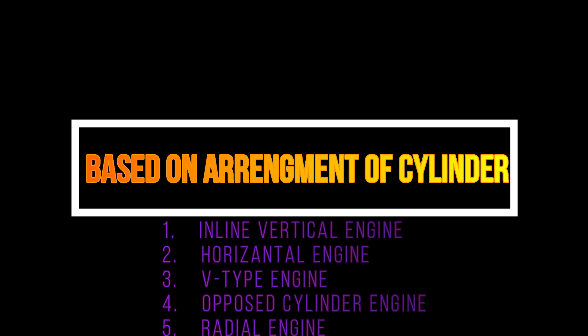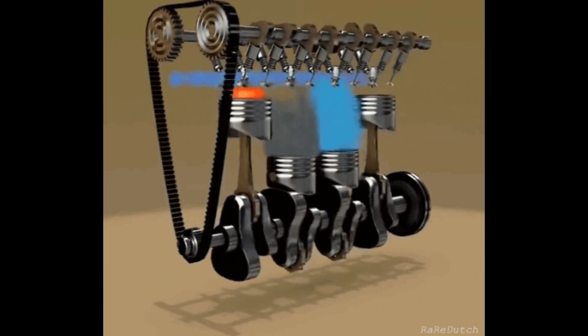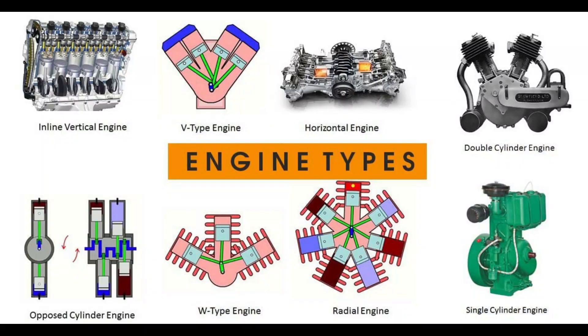Classification by cylinder arrangement: inline vertical engine, horizontal engine, V-type engine, opposed cylinder engine, radial engine. Inline engines have cylinders in a vertical line; V-type has a V arrangement.